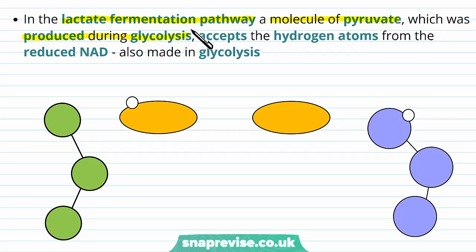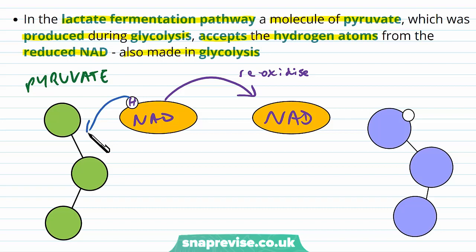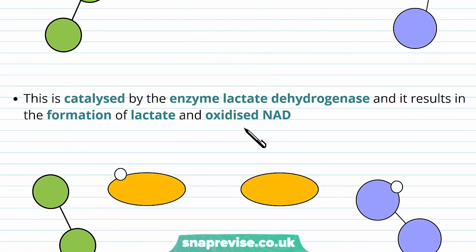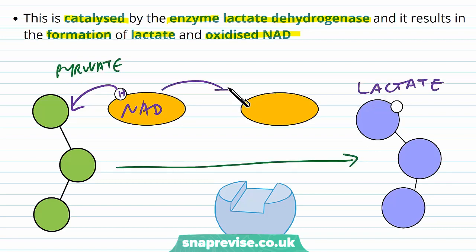In the lactate fermentation pathway, a molecule of pyruvate produced at the end of glycolysis accepts the hydrogen atoms from the reduced NAD molecules which were also made in glycolysis. The pyruvate takes the hydrogen atom off the NAD, so we get oxidized NAD again, but in accepting the hydrogen the pyruvate becomes a molecule of lactate. The main product we're trying to make is re-oxidized NAD; lactate is the by-product. This reaction is catalyzed by the enzyme lactate dehydrogenase.